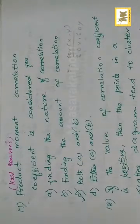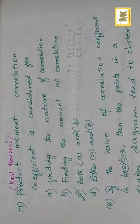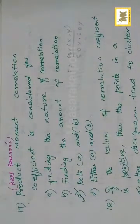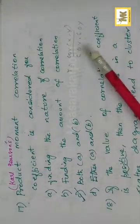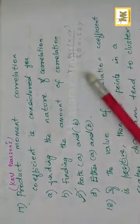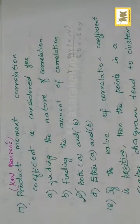Karl Pearson's coefficient — another name is product moment correlation coefficient. It is considered for finding the nature of the correlation and finding the amount of correlation. If the answer is positive, it is positively correlated; if negative, it is negatively correlated. So we can find the nature, and we also get a number — the amount of correlation. Both A and B is right.